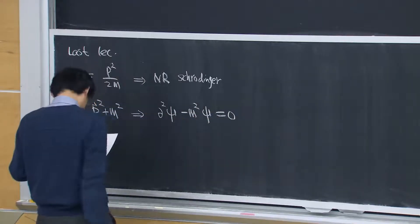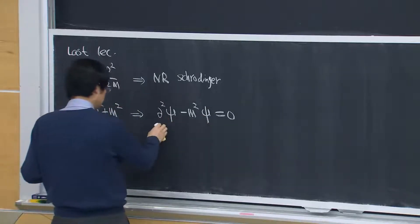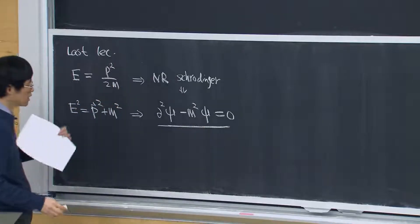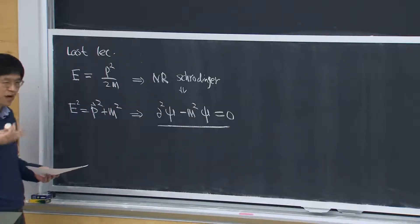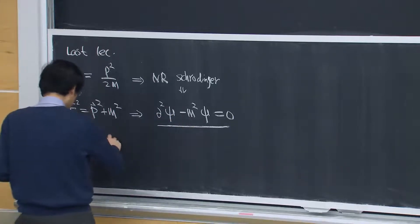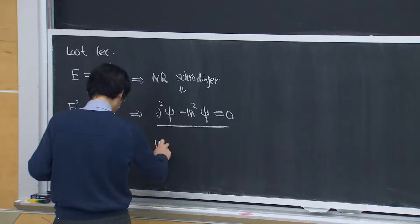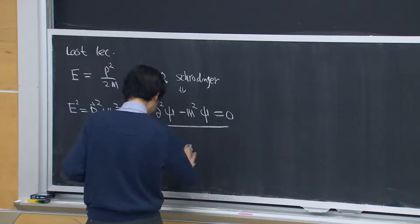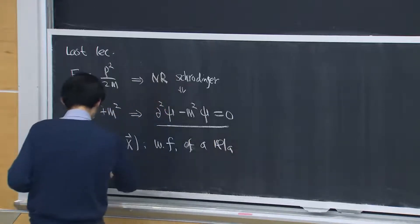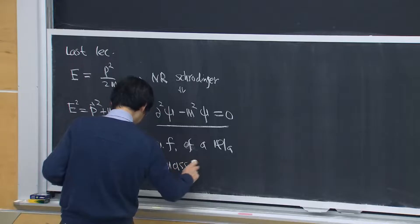Here psi has the interpretation of the wave function, and this equation describes the quantum mechanics of a relativistic free particle of mass m. So psi(t,x) is the wave function of a relativistic particle of mass m.